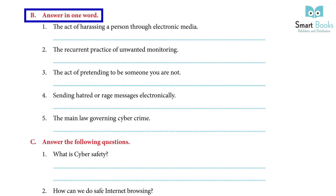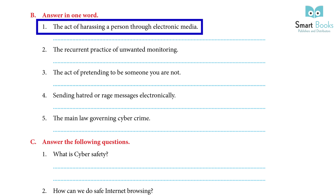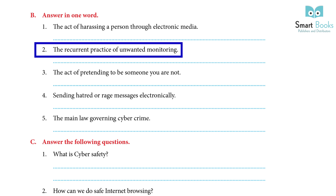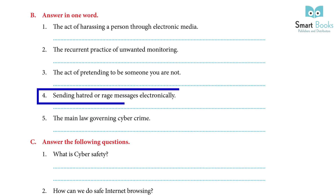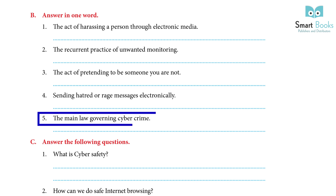Answer in one word: 1. The act of harassing a person through electronic media — Answer: Cyberbullying. 2. The recurrent practice of unwanted monitoring — Answer: Cyberstalking. 3. The act of pretending to be someone you are not — Answer: Impersonation. 4. Sending heated or rage messages electronically — Answer: Flaming. 5. The main law governing cyber crime — Answer: Information Technology Act 2000.